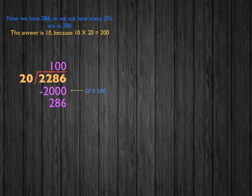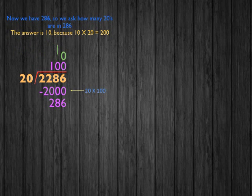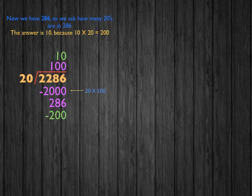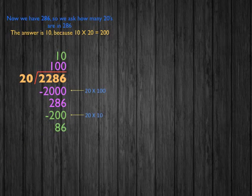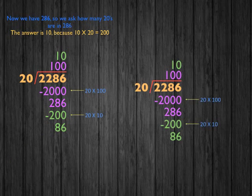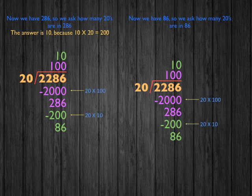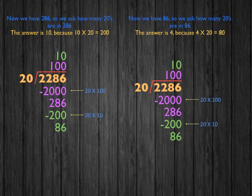We continue the same pattern: write the 10 on top, then subtract 200 from 286, giving us a result of 86. Then we ask how many 20s are in 86. The answer is 4, because 4 times 20 equals 80.